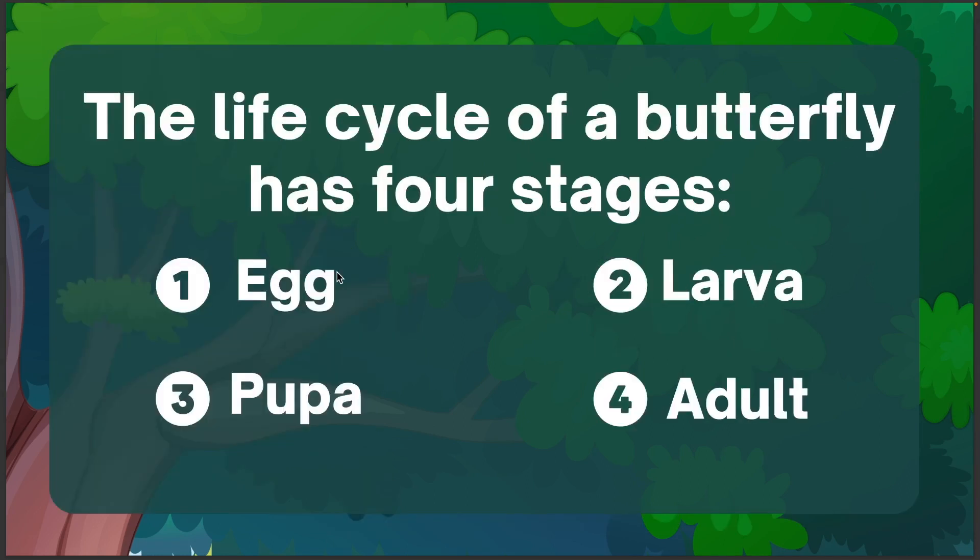The life cycle of a butterfly has 4 stages: egg, larva, pupa, and adult stages.